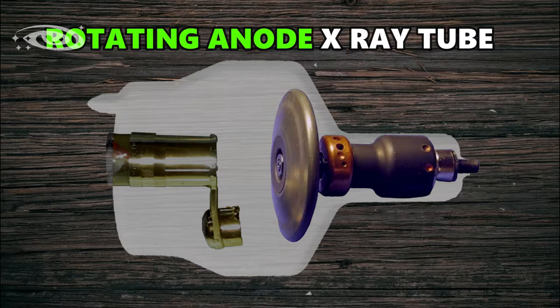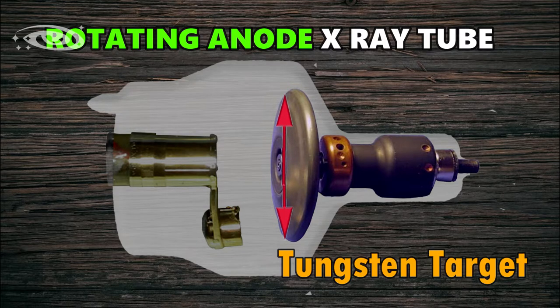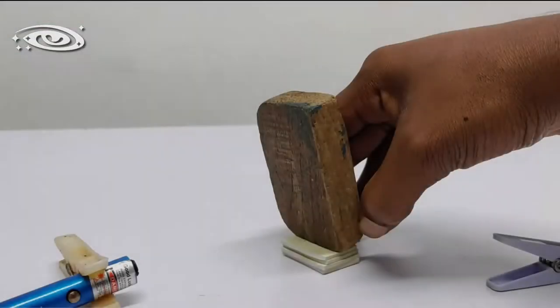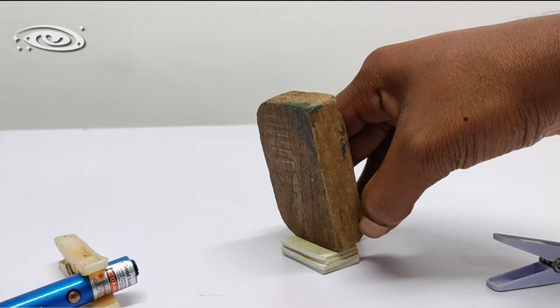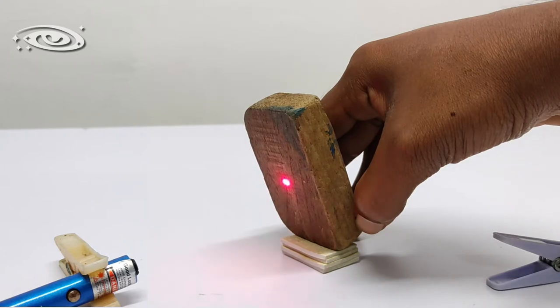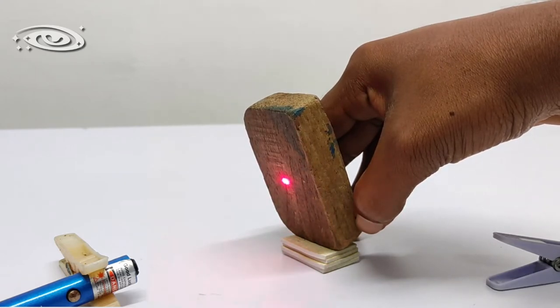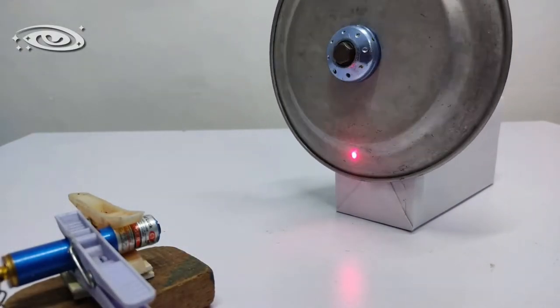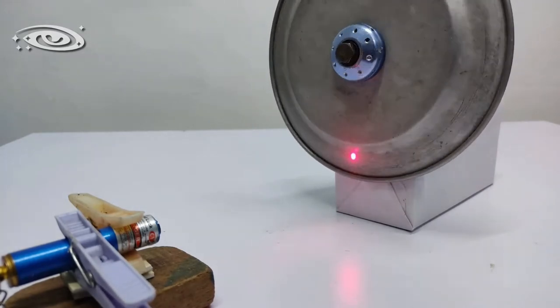In rotating anode X-ray tube, the target is not stationary and also target is not very small. The target is large. It is large disk function target. And they made this target disk to rotate by using rotor. In previous generation X-ray tubes target is stationary. So all the electrons will interact at the same region for each and every exposure. And also only small region is used to produce X-rays. So by rotating the target, we can use all the region of this X-ray tube and it can also reduce the pitting.